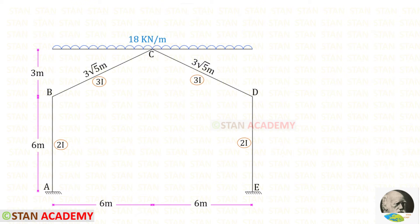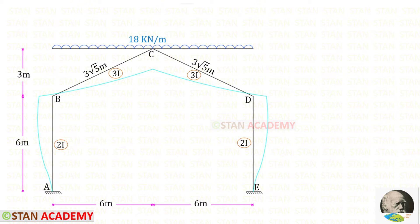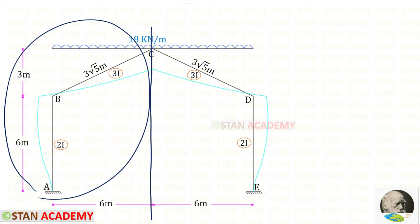Now let us see how this frame deforms. Since the frame is symmetrical and the loading is also symmetrical, at point C there will be no slope — so theta C equals 0. From the center, we can split the frame into two parts and take only the left side for analysis.